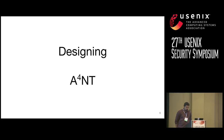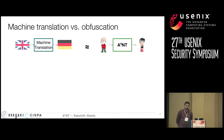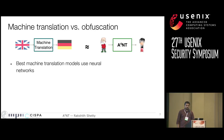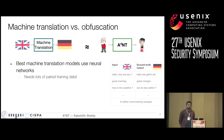So how do we design this model? We start by noting the similarities between automatic obfuscation and machine translation. In machine translation, you're taking text from an input language to a target language; in obfuscation, you take it from an input style to a target style. Best machine translation models use neural networks — for example, Google Translate is based on large neural networks. While these work quite well, you need a lot of paired training data.